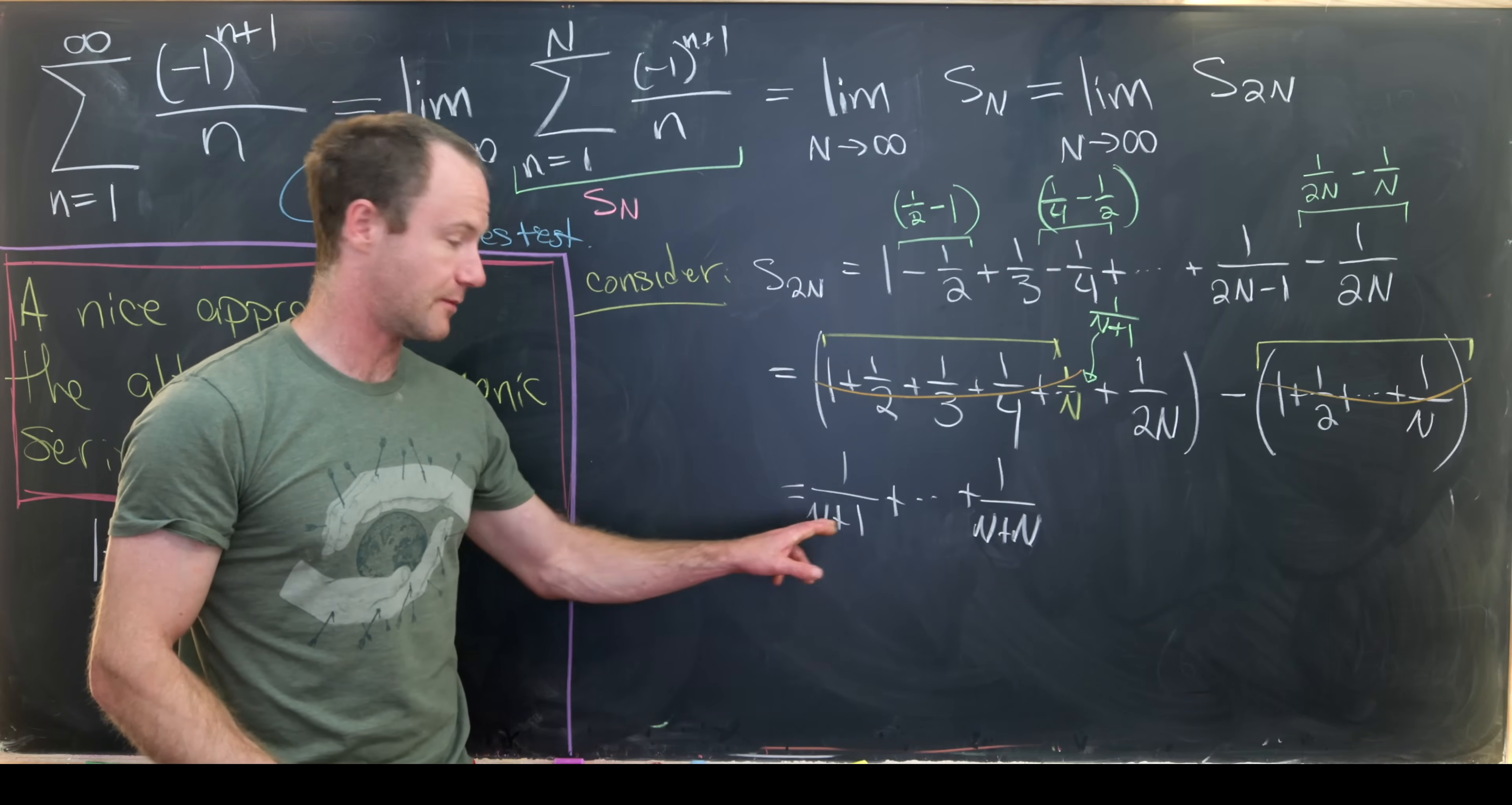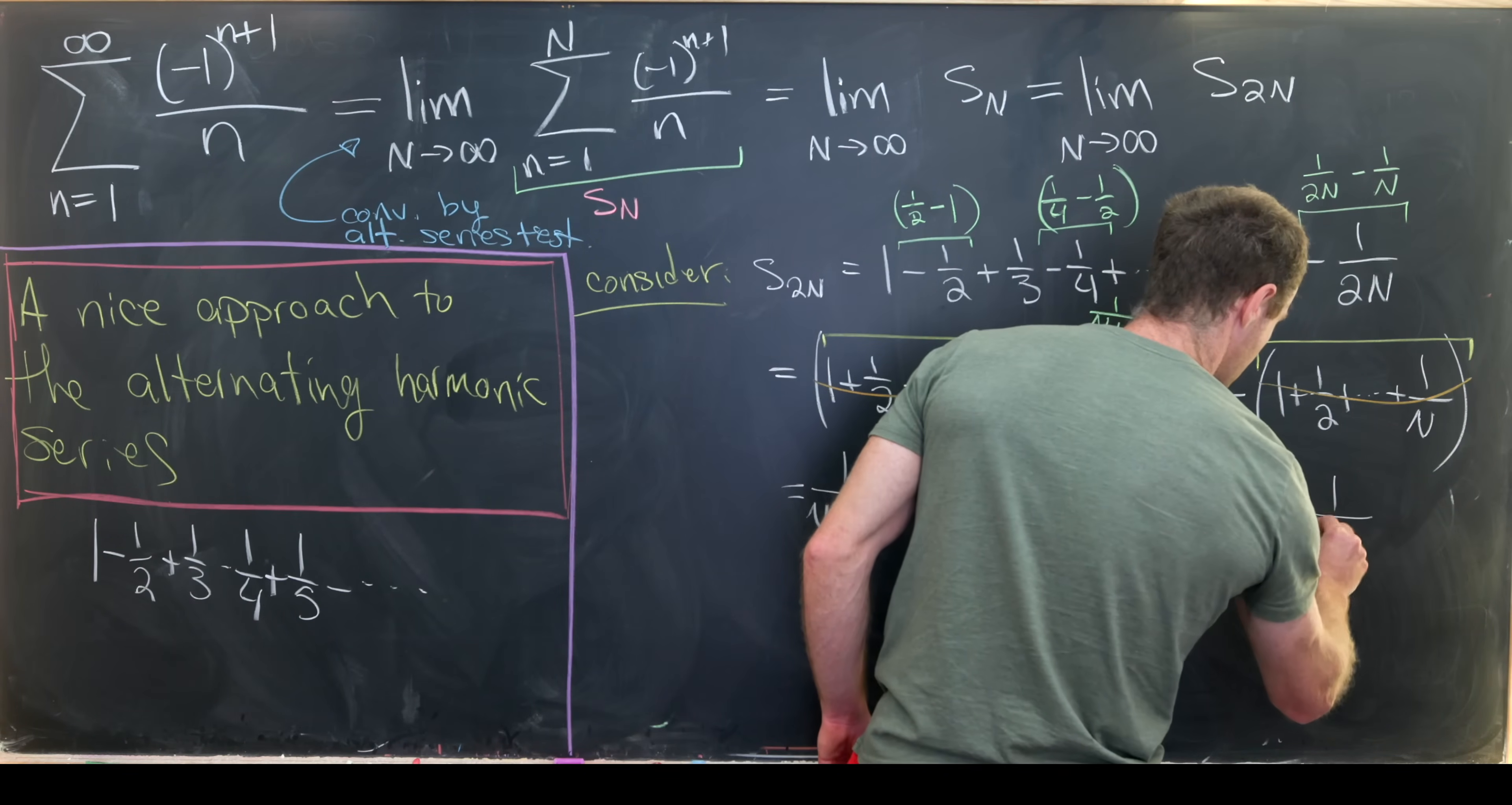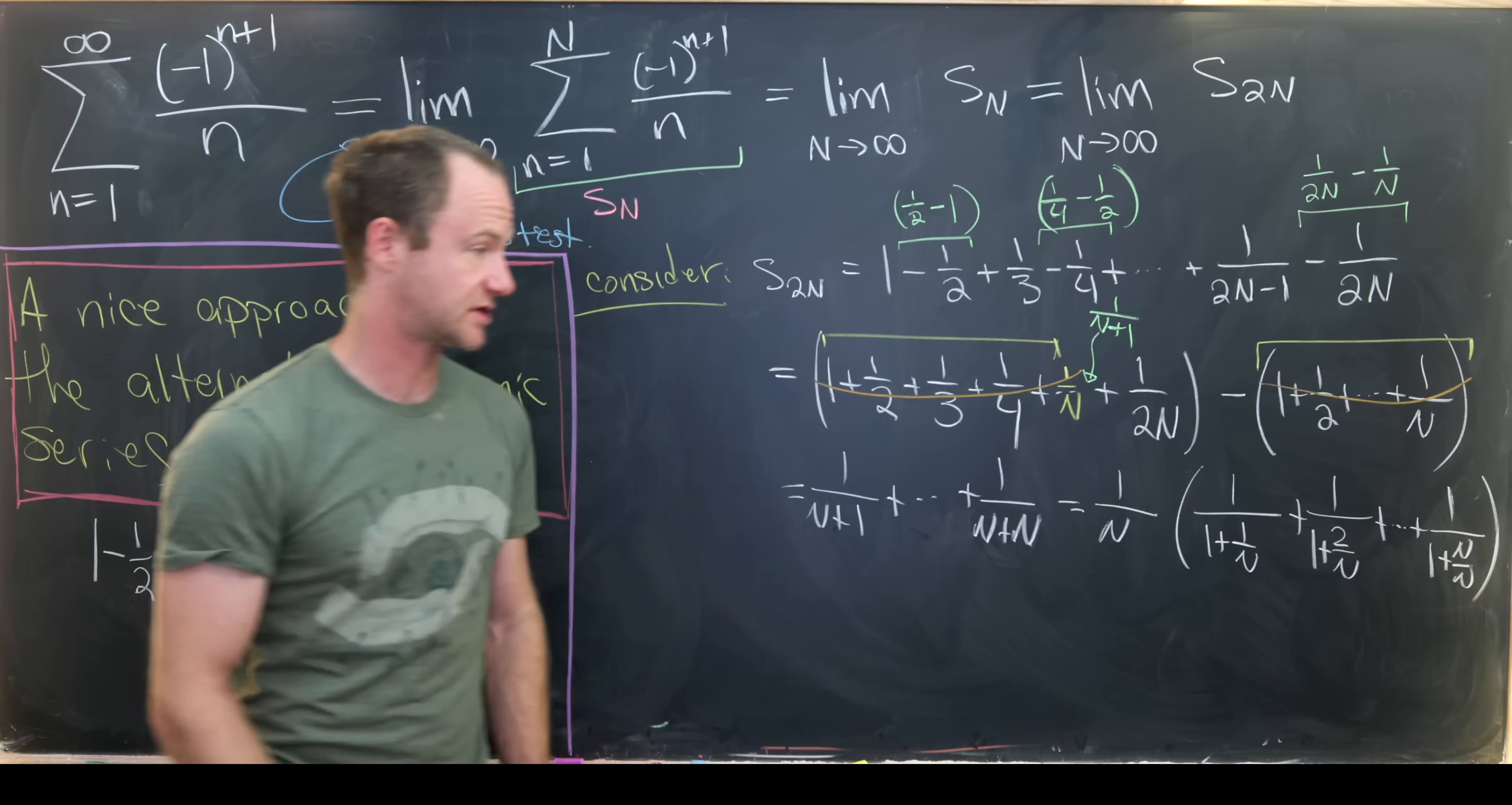But I'll in fact write this 1/(2N) as 1/(N+N). So that makes it look like 1/(N+something). And then from here I'll factor out a 1/N. And that leaves me with 1/(1+1/N). So that would be this first term. So that would be the second term which is not shown all the way up to 1/(1+N/N). That would be this last term.